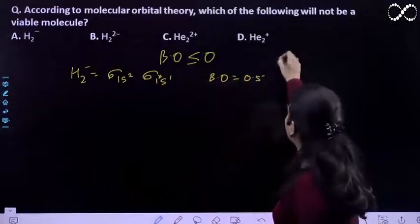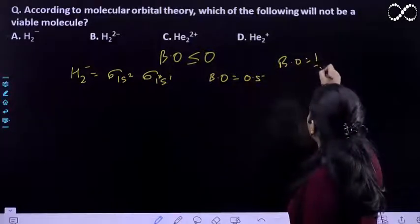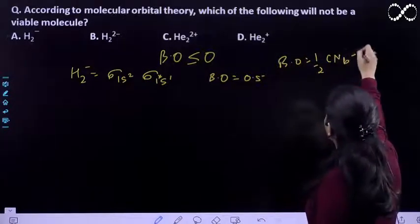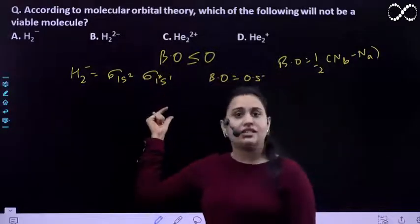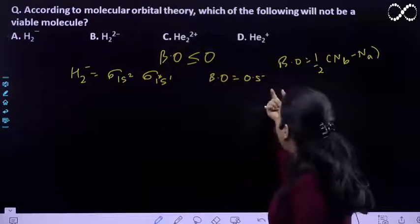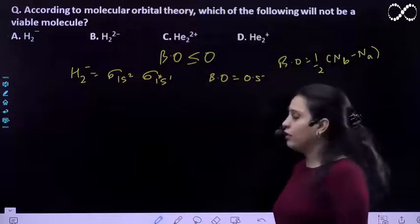Bond order is half of number of electrons in bonding minus number of electrons in anti-bonding. The star wala thing is anti-bonding. Toh yehan pe aapka bond order aagya 0.5.